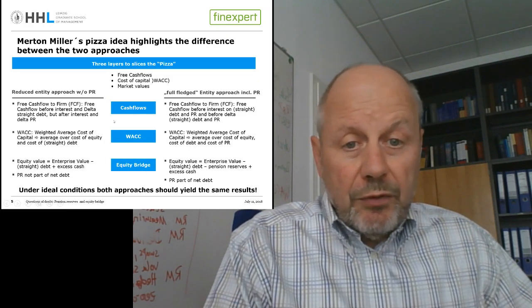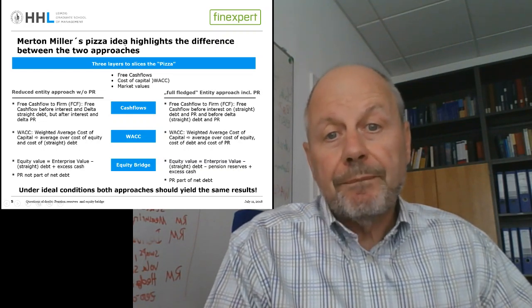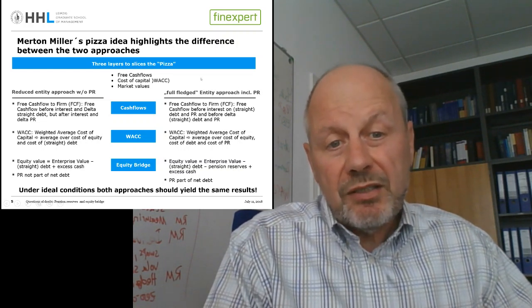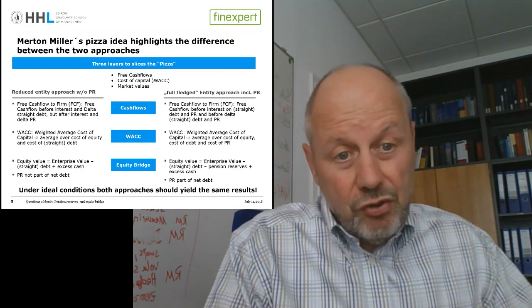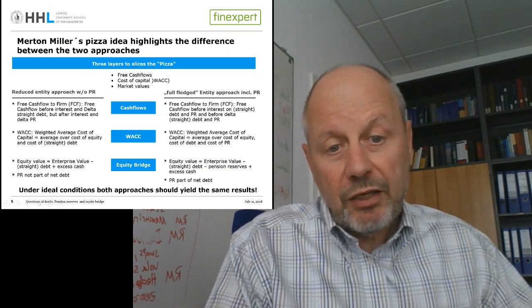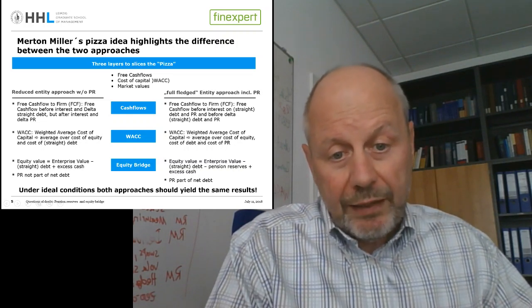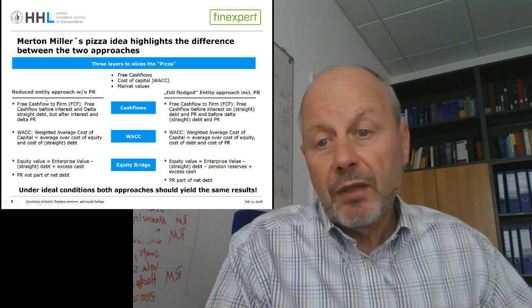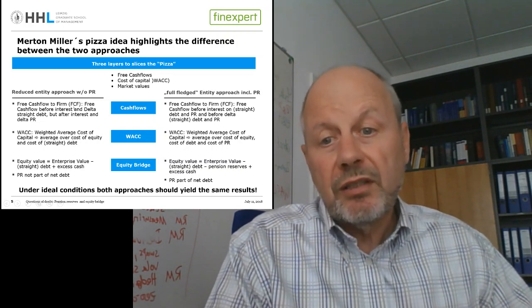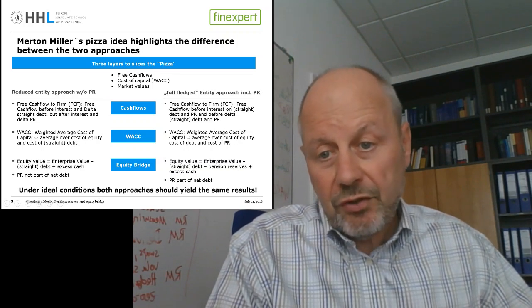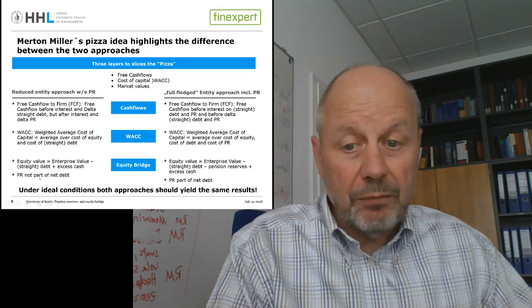A nice way to highlight the difference between the two is the famous Modigliani-Miller pizza example. The full-fledged entity approach is a three-pizza-slice approach: the slices represent straight debt holders, pensioners or employees, and equity holders — giving us a three-fold free cash flow and a three-fold WACC, with pension reserves part of the equity bridge. The reduced version is a two-pizza-slice approach: the free cash flow is adjusted for all flows going to pensioners and from employees, the WACC contains only straight debt and equity, and pension reserves are not part of the net debt.